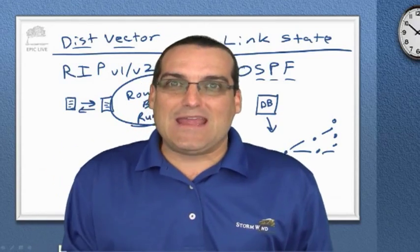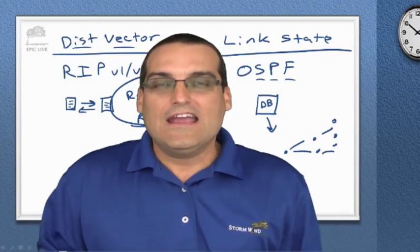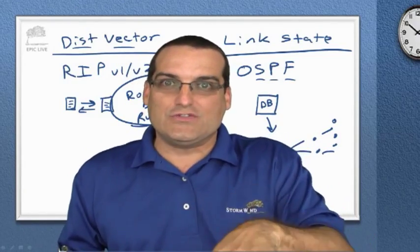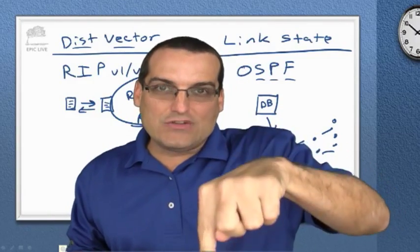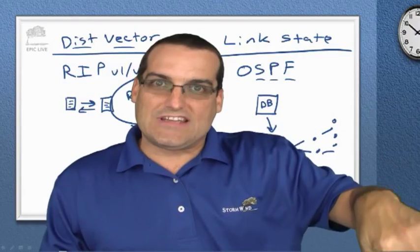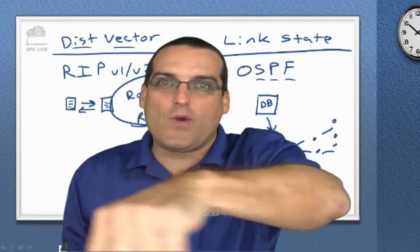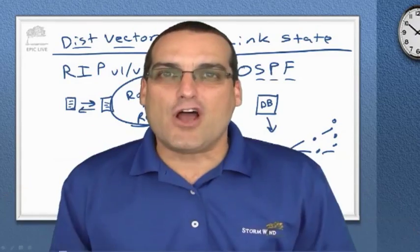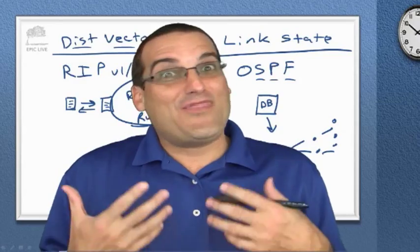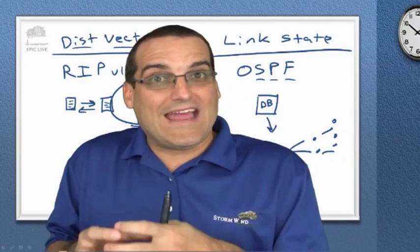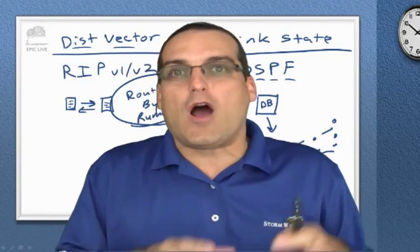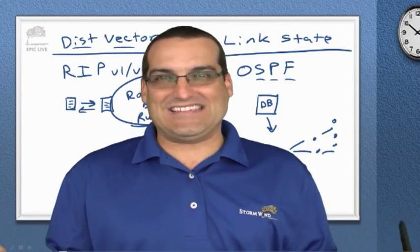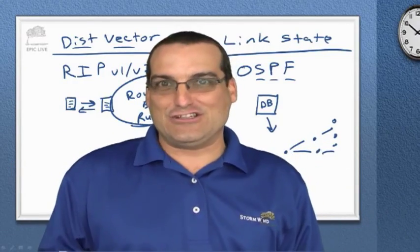Routing by rumor could be prone to errors. It reminds me of a game from third or fourth grade — the teacher whispered something to one of 20 students in a circle, and each student whispered it to the next. By the time the phrase got all the way around, it was completely distorted. Similarly, if a router gets bad information, it propagates that bad information to other routers. Link state doesn't suffer from that issue.